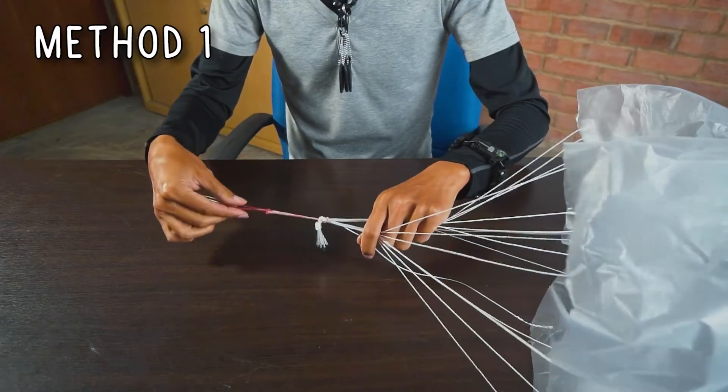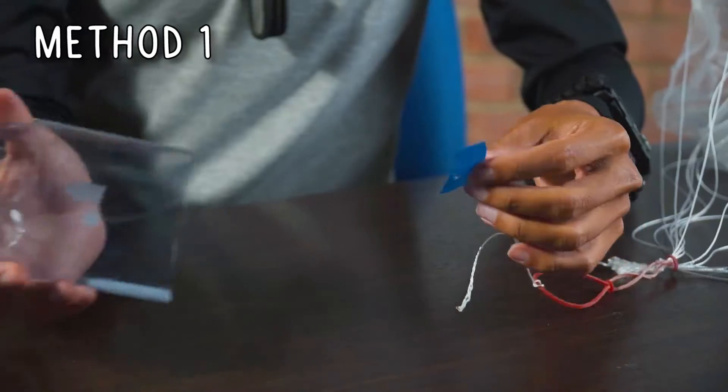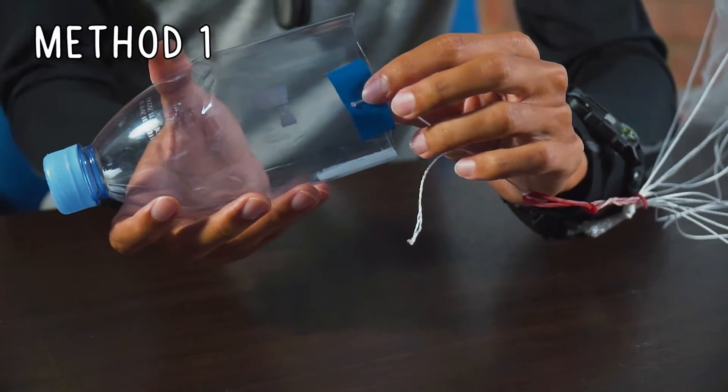Now, tape the two ends of the 30 cm long string, one to the top of the rocket, the other to the cone that you removed earlier.